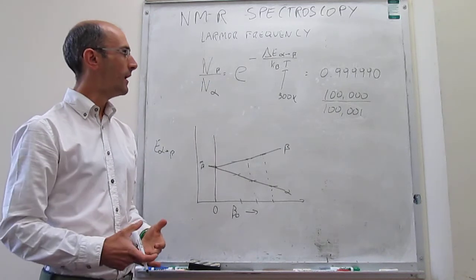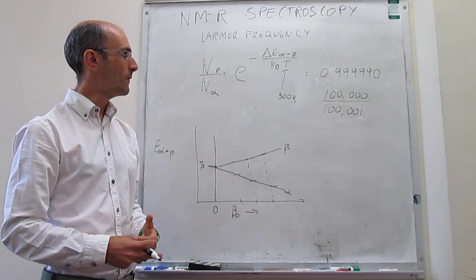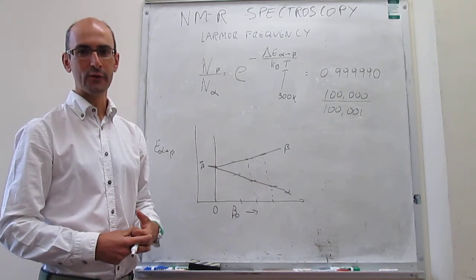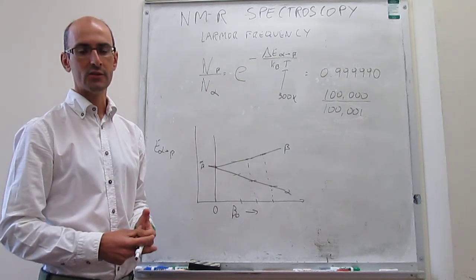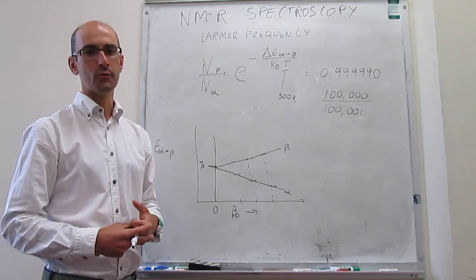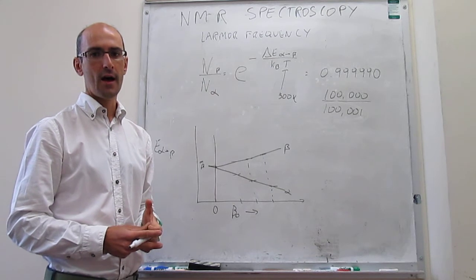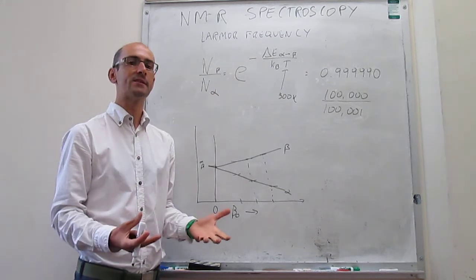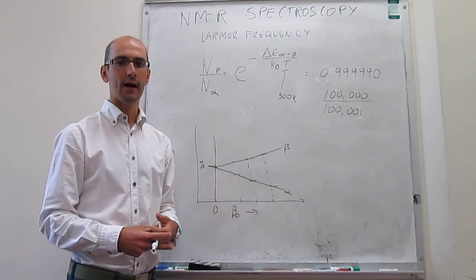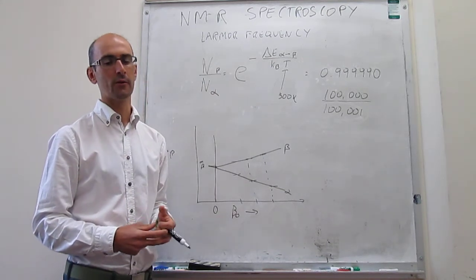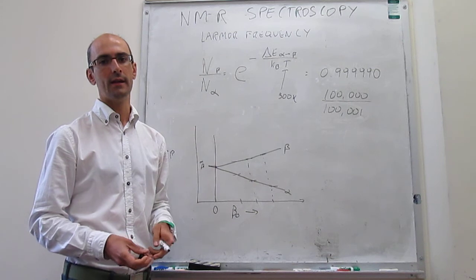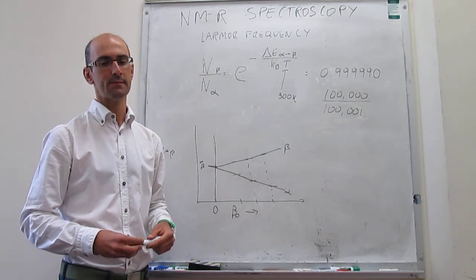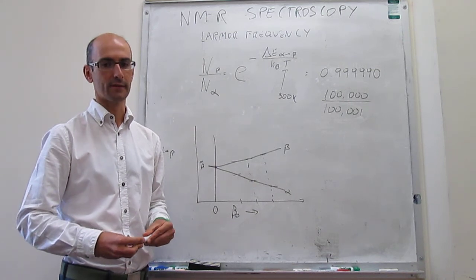This finishes our discussion of the Larmor frequency and some practical considerations for NMR spectroscopy before we get started with how the spectra actually look, including details like chemical shift and spin-spin coupling.